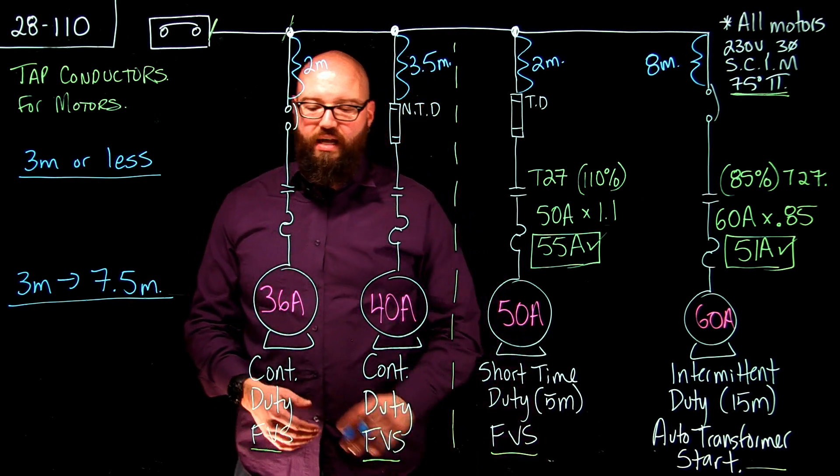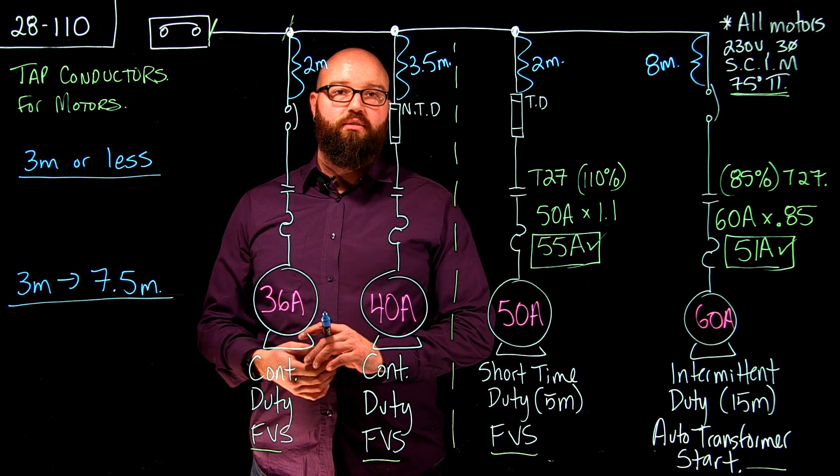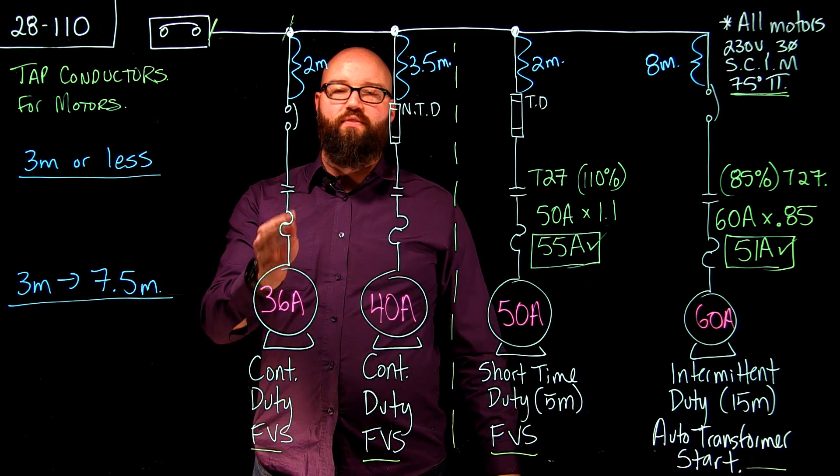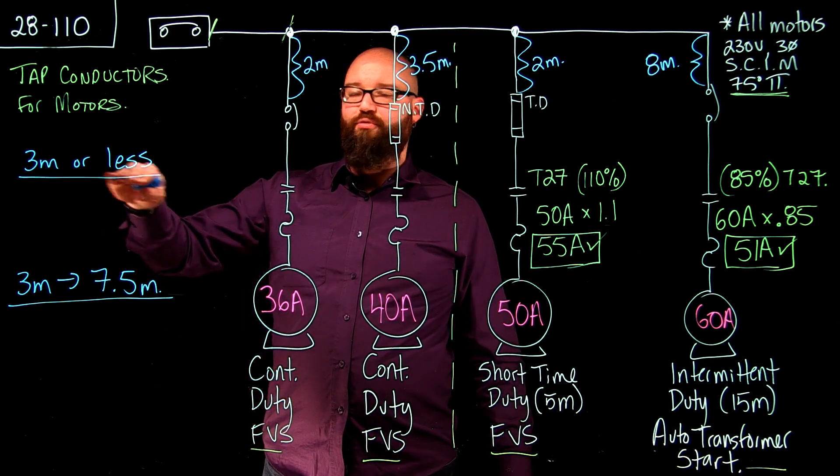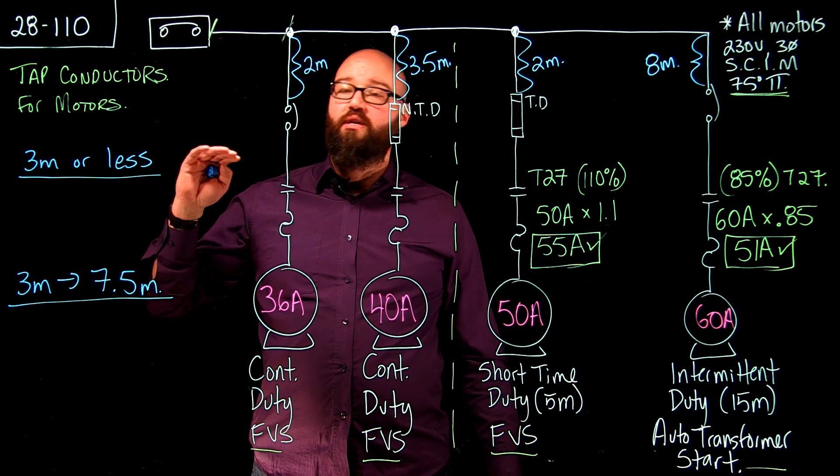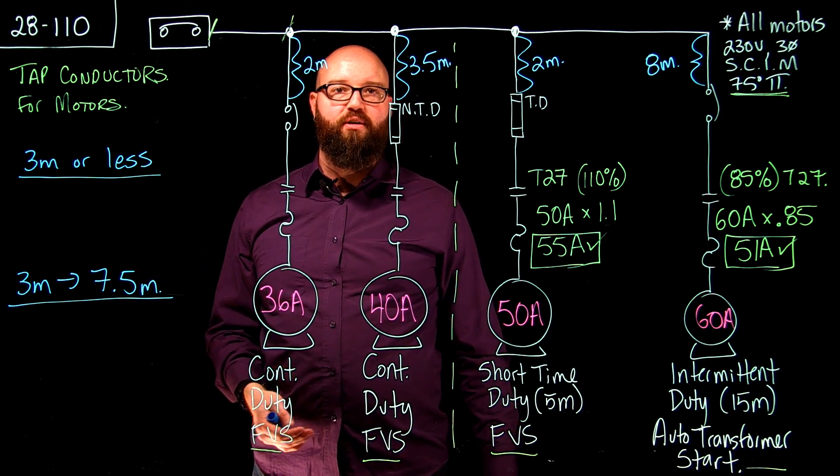We have a 36 amp FLA. It is a continuous duty rated motor. I'm going to have to first size the branch circuit for this individual motor because it tells me for 3 meters or less I'm allowed to apply if it's less than 3 meters the branch circuit calculation from 28106 and that will be sufficient for a tap conductor.